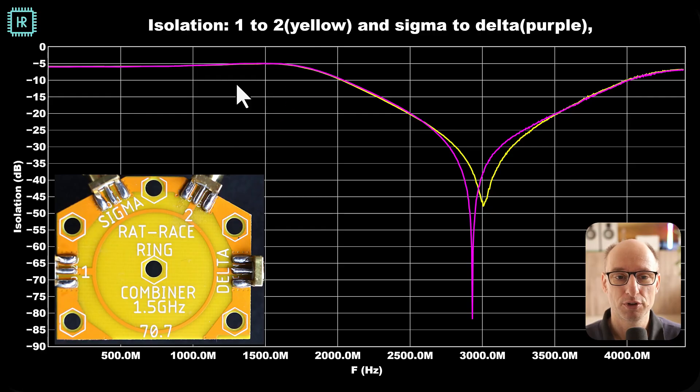Let's have a look at the isolation. So when we go from port 1 to 2, it should be isolated, and from sigma to delta it should also be isolated. And you see that the isolation is pretty good. You see an extremely deep dip here at minus 80, but you see that generally at 3 gigahertz, which was the design frequency, there's a pretty good isolation of, well, roughly 30 decibels.